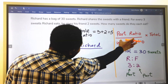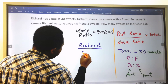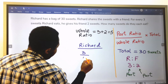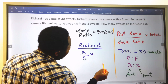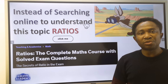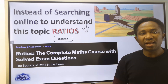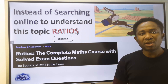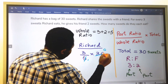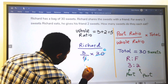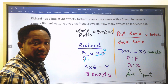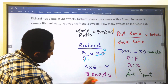Richard will get, from this formula, a part ratio of 3, divided by the whole ratio of 5, multiplied by the total number of sweets, which is 30. 5 into 30 is 6, so 3 multiplied by 6 gives you 18. Richard got a total of 18 sweets.